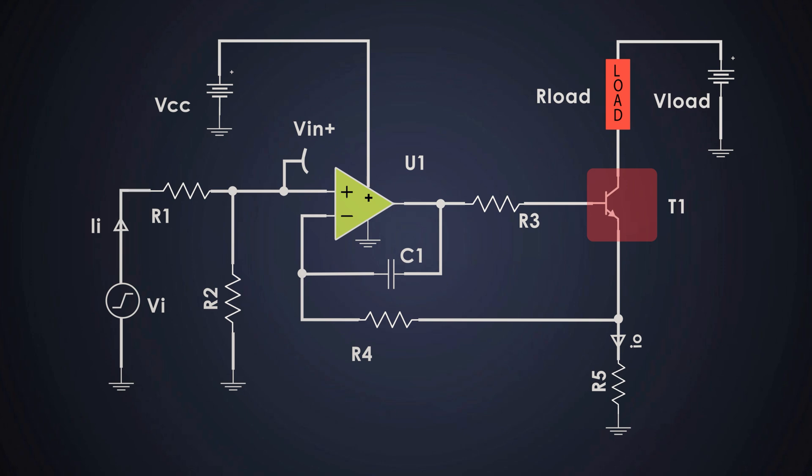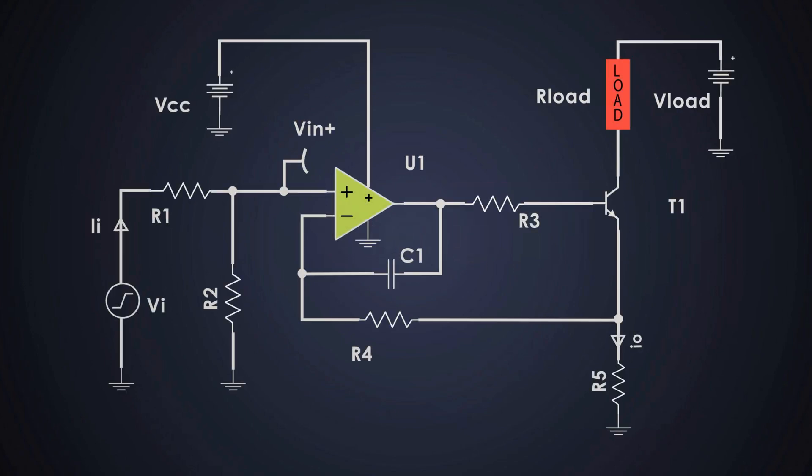This power BJT operates in its active region, behaving like a current amplifier controlled by the Op-Amp output. The collector is connected to the load and a very high power supply. The emitter is connected to the current sense resistor R5. The base is driven by the Op-Amp through resistor R3. The Op-Amp increases or decreases base voltage to T1 to control its collector emitter current such that the voltage across R5 equals the scaled input voltage.